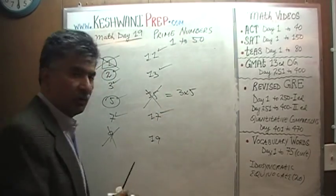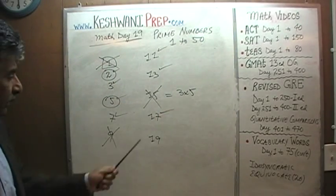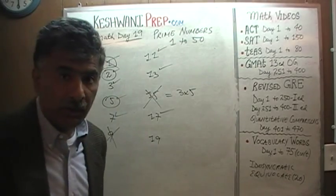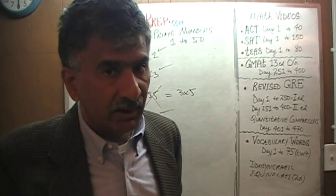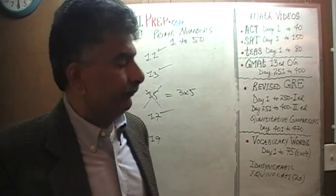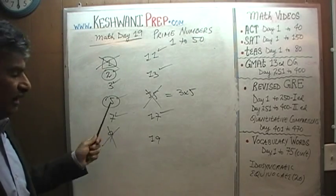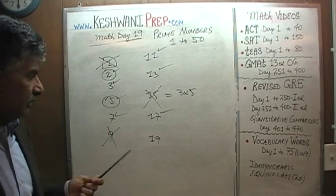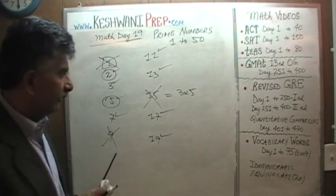17 is a prime number because we can't divide 17 by 13, 11, 7, or 5. We cannot divide 17 evenly by any of them — 17 divided by 5 is not going to be an integer, and 17 divided by 3 is not going to be an integer. 17 is a prime number, and so is 19. Let's carry on.